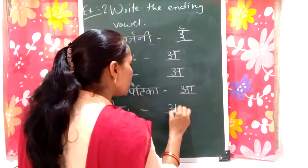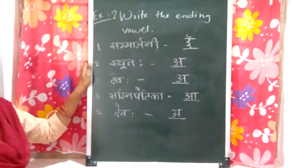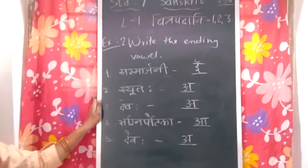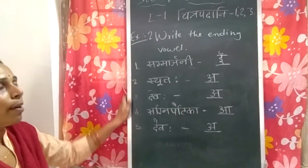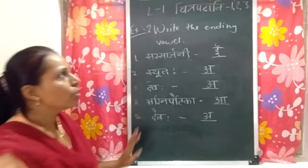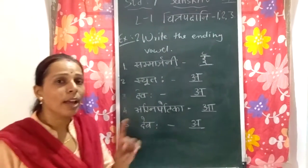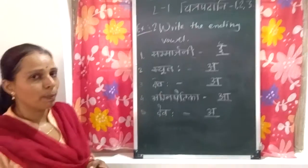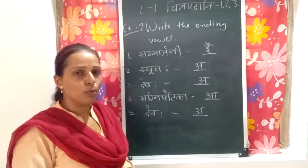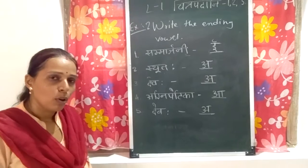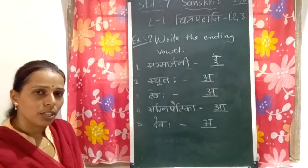Agni betika — the ending vowel is 'a'. Devah — the ending vowel is 'a'. Now you have to write exercise 1 and 2 in your notebook, and you have to learn all the words of Chitrapadhani 1, 2 and 3, and write all the words three times in your notebook and learn them. We will continue in the next session. Thank you.